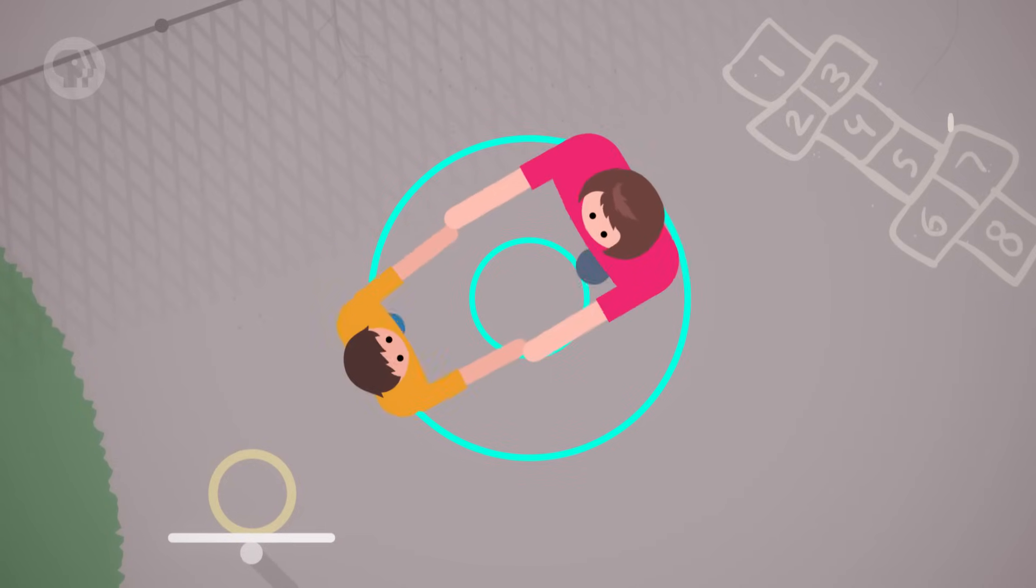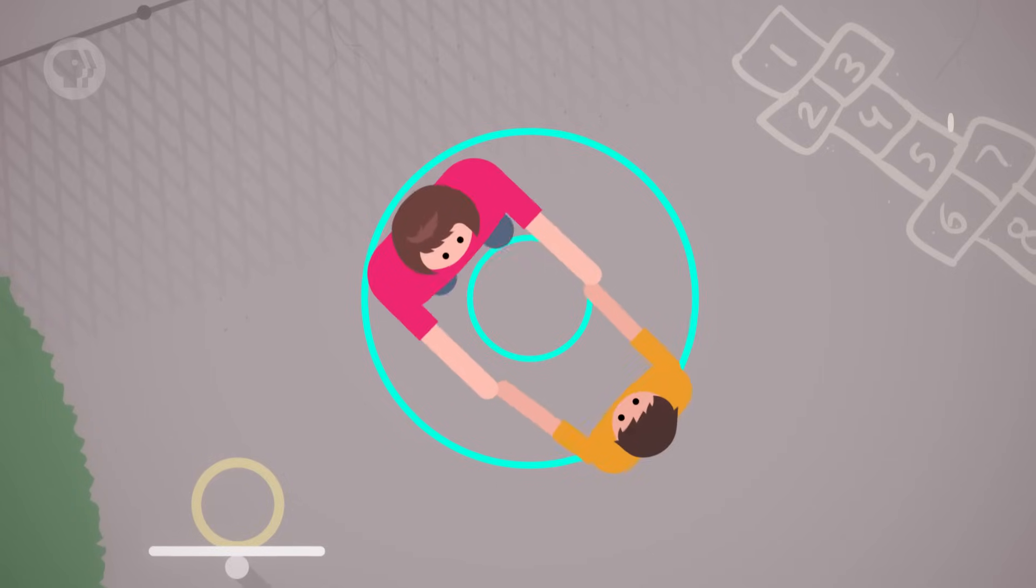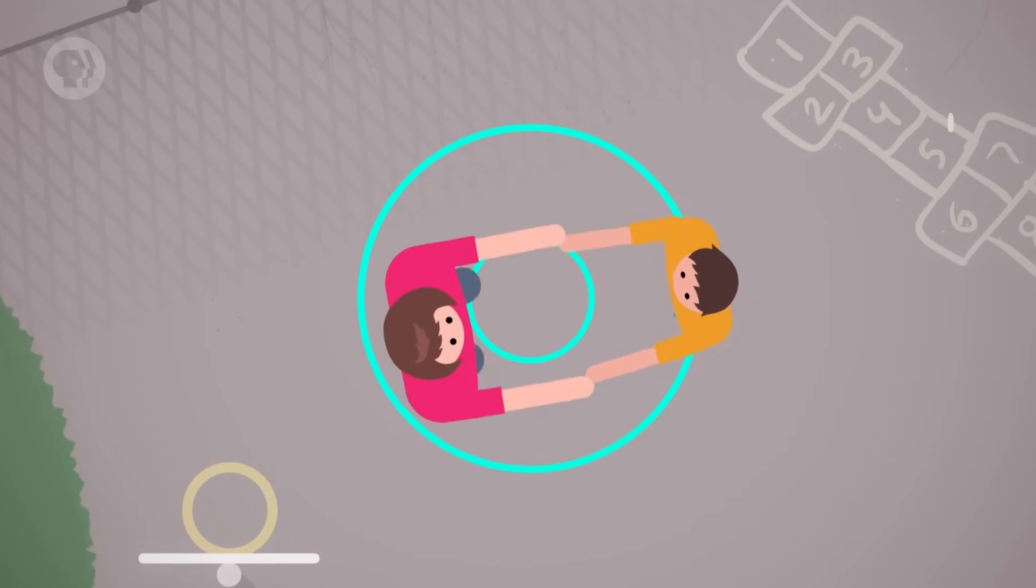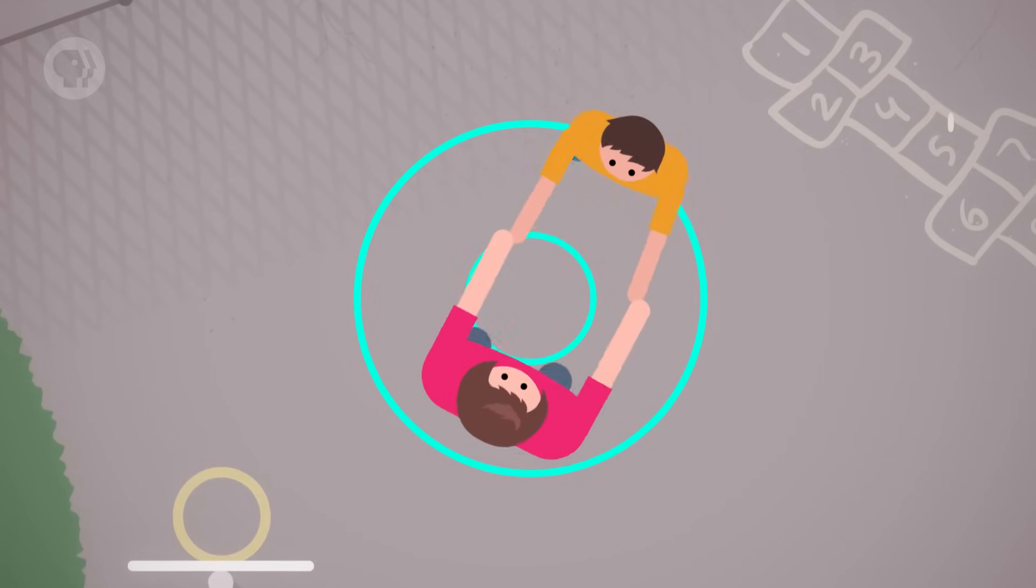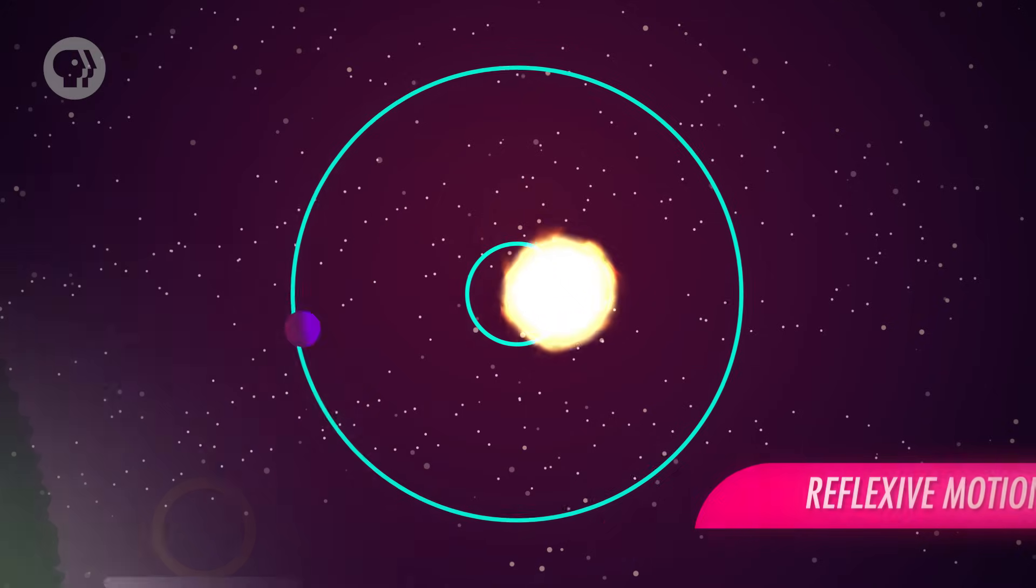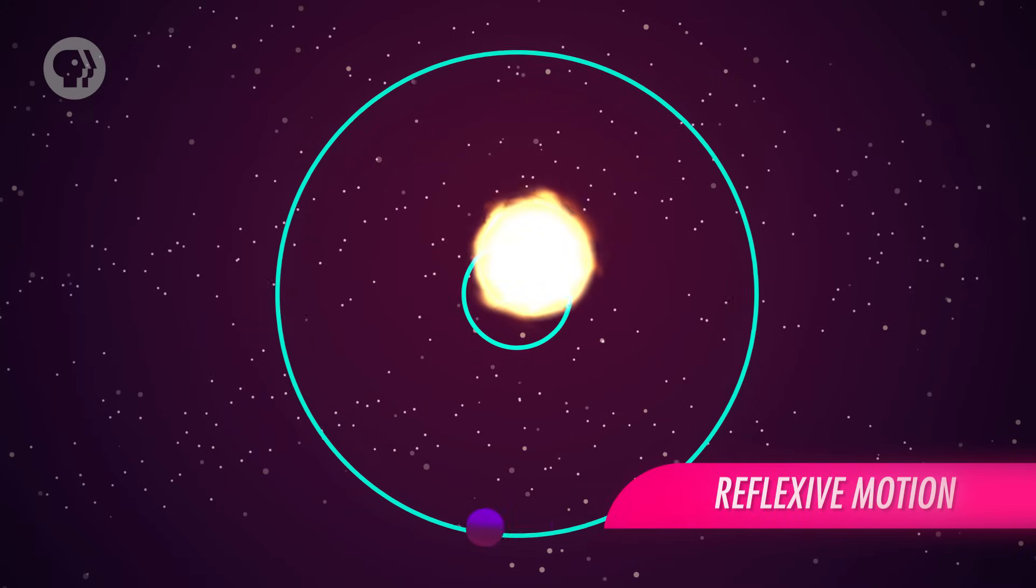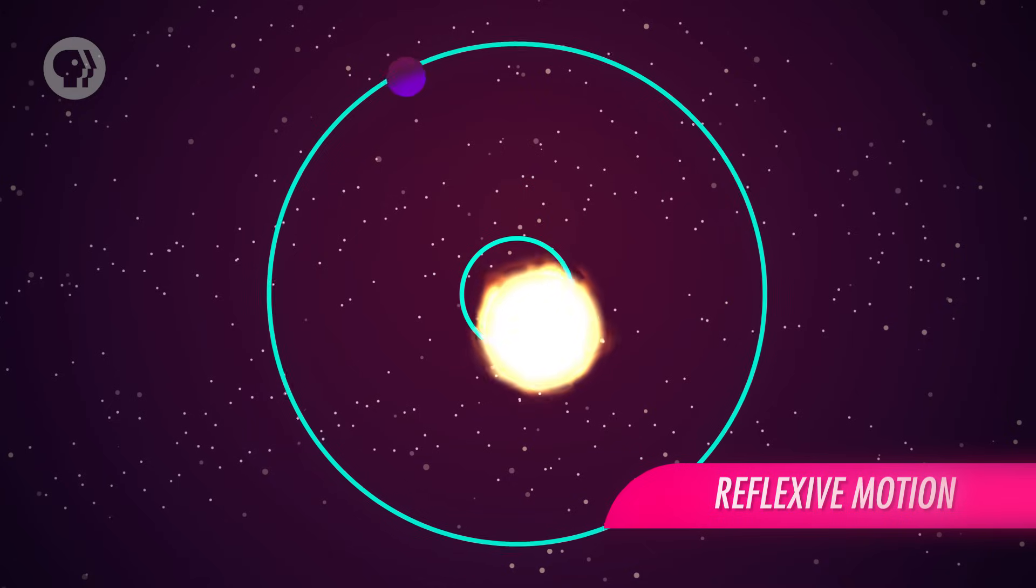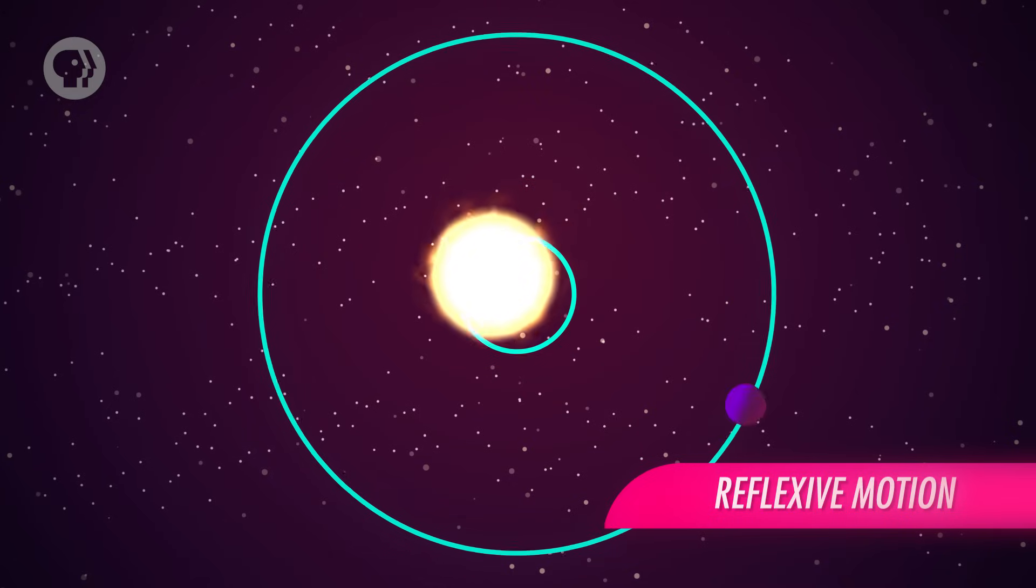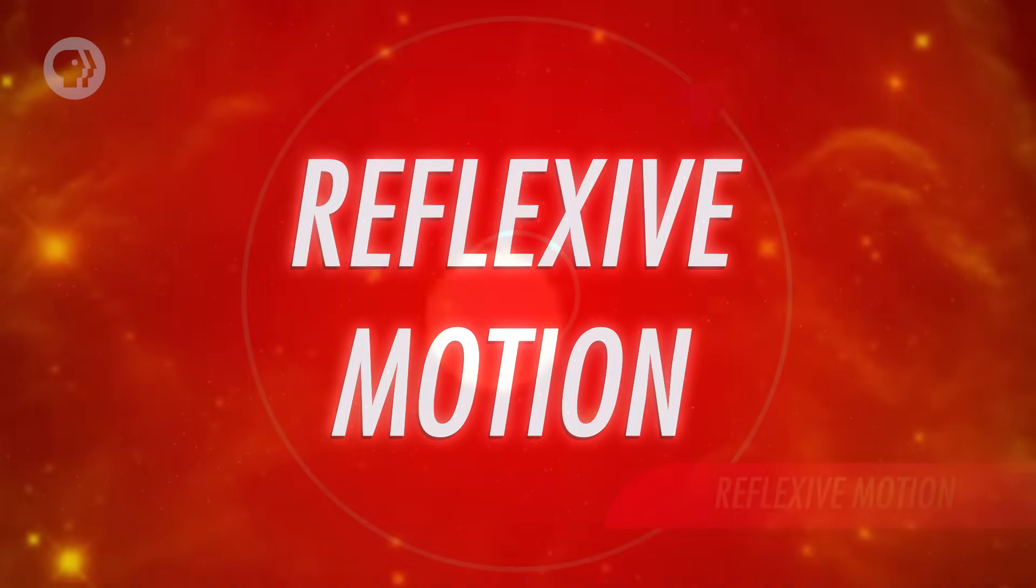Imagine two kids, one big and one small, facing each other. They clasp hands and start to spin around. As they do, the little kid, who weighs less, will make a big circle, and the bigger kid will make a small circle. The same would be true of a star and planet. As the planet orbits the star, it makes a big circle, or ellipse. But the planet has gravity, too, and it tugs on the star. That means the star will make a small circle, what's called reflexive motion.